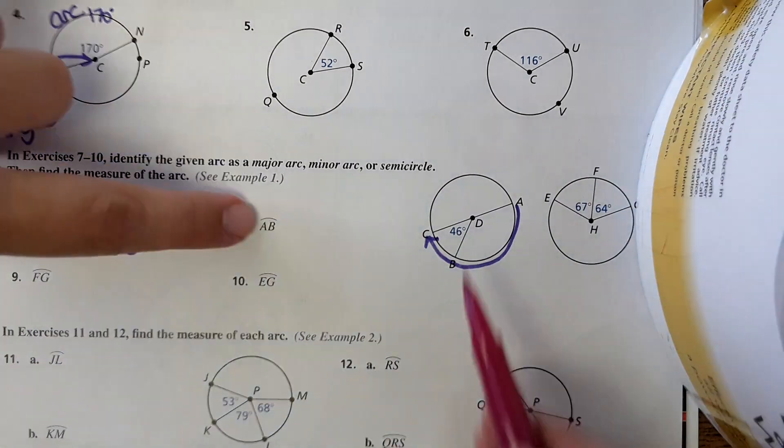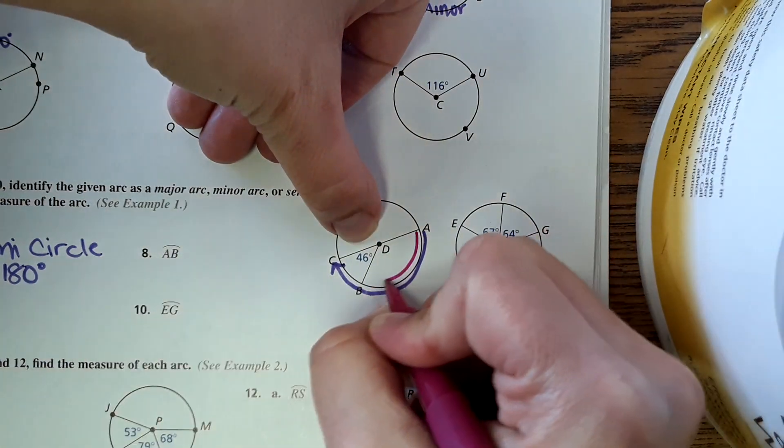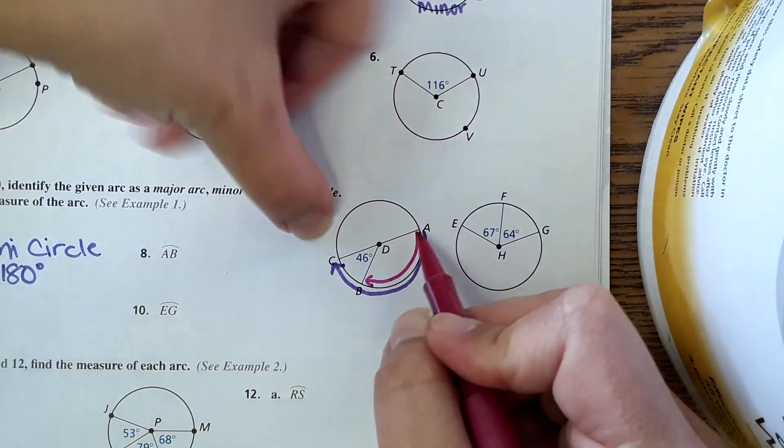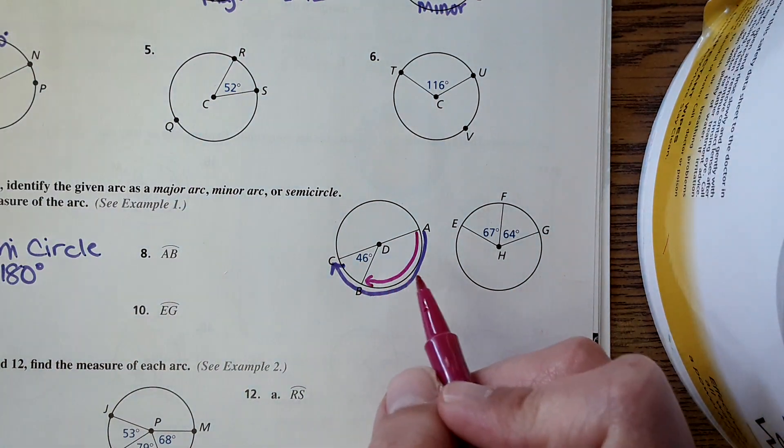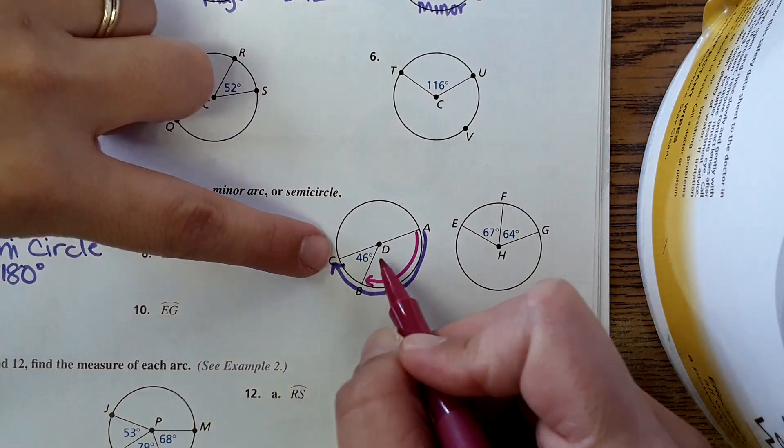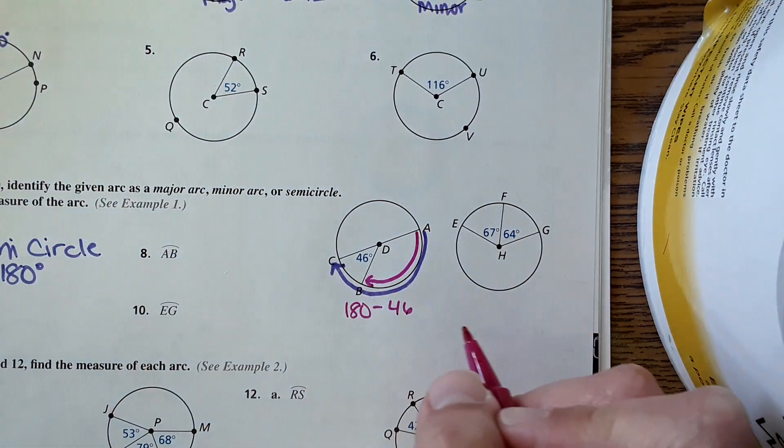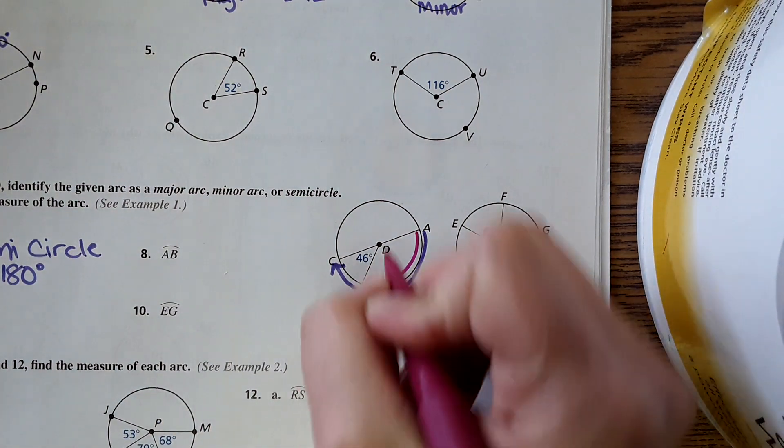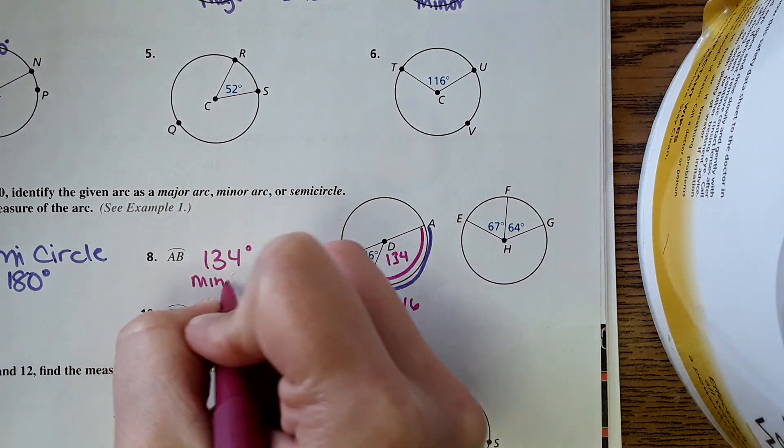Next, AB right here. Looking at it, AB is right here. Also notice that AB could be the other way around, however always go the shortest distance from one to the other. So AB right here, what would be the measure of that? Well we can do 180 minus 46 to find that measure and it comes out to 134 degrees, and it would be a minor arc.